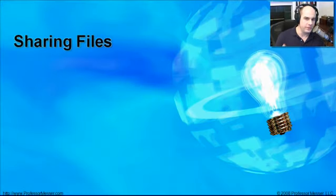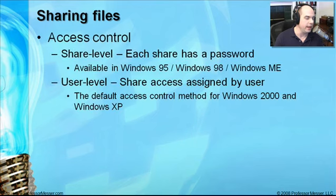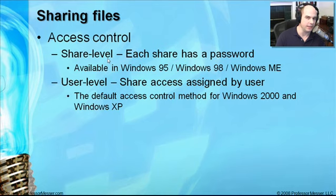If you're on a network and you've connected devices together, certainly one of the primary goals is to be able to share files. The file sharing system in Microsoft Windows is relatively straightforward if you know the ins and outs. The first thing to keep in mind is the type of access control done in Microsoft Windows. Prior to Windows 2000 and Windows XP — Windows 95, 98, and Windows ME — there was a type of access control called share-level access control.